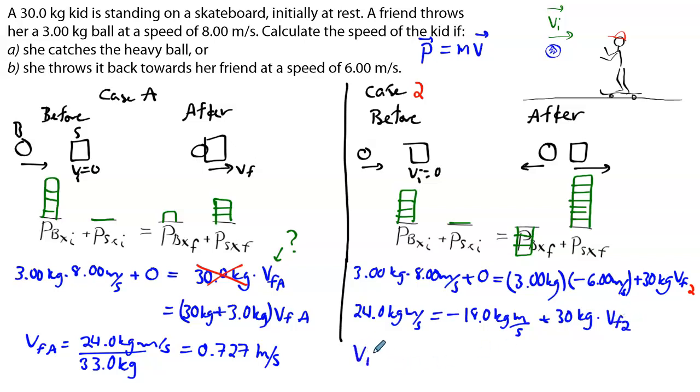And we can find that the final velocity of case 2, once we do the math, will be equal to 1.4 meters per second. So indeed, just as we expected, in the first case, the speed of the skater will be smaller because the change of momentum of the ball is smaller in case A than it is in case 2. Thanks.